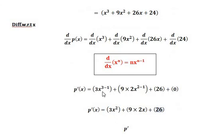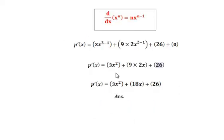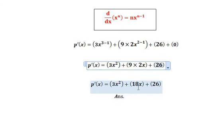So 3x^(3−1) gives 3x². Then 9 times 2 equals 18, giving 18x. Plus 26. So the final answer is 3x² + 18x + 26. If you have any confusion, any query, or any question, you can ask in the comment section. Thank you.